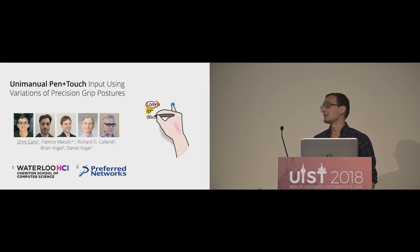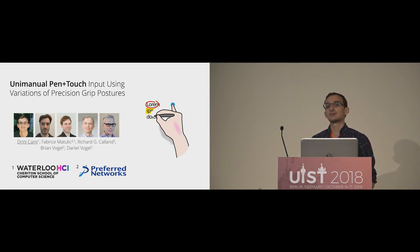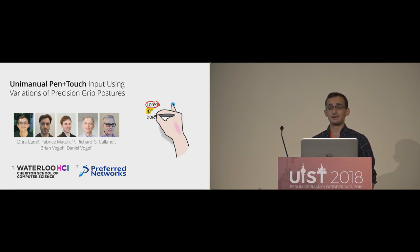I'm Drina Kami, an undergrad student at the University of Waterloo, and I'll be talking about Unimanual Pen Class Touch. This is a project I worked on with Fabrice, who was a post-doc at the University of Waterloo and is currently working at Preferred Networks, along with Richard and Brian. Our advisor was Dan Vogel at the University of Waterloo.